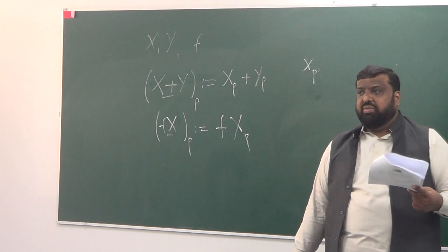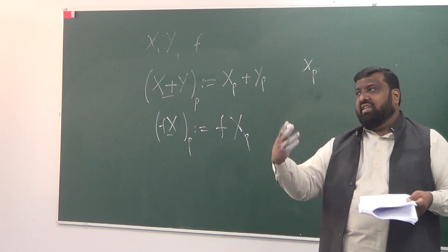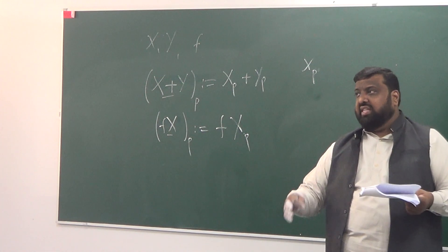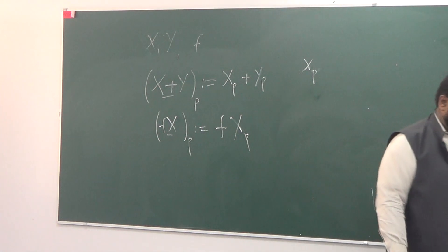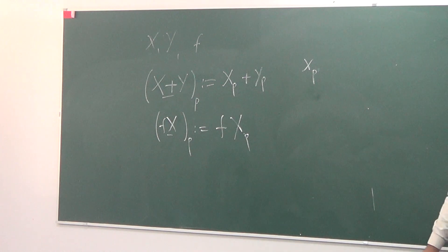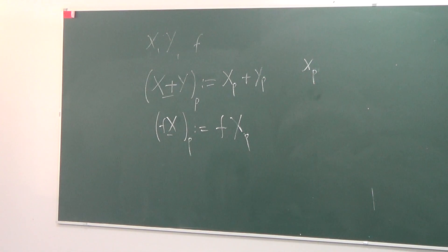So ring satisfies closure and associative property — not all properties of a group. The ring is a particular abstract algebraic structure — you can explore this. So what I am essentially defining is how to sum vector fields and how to multiply them with a scalar.